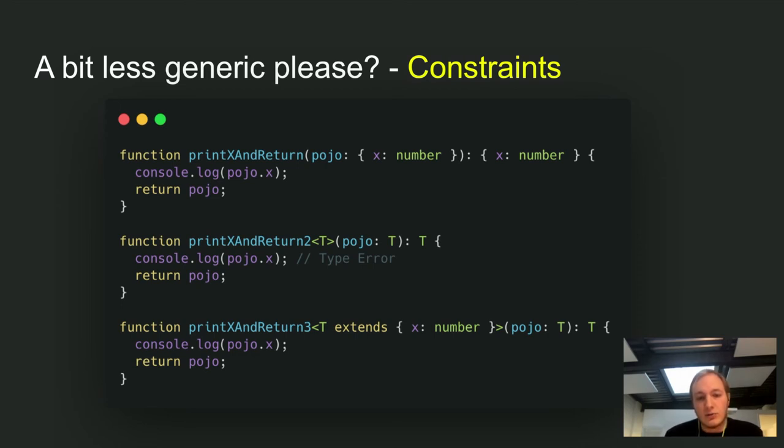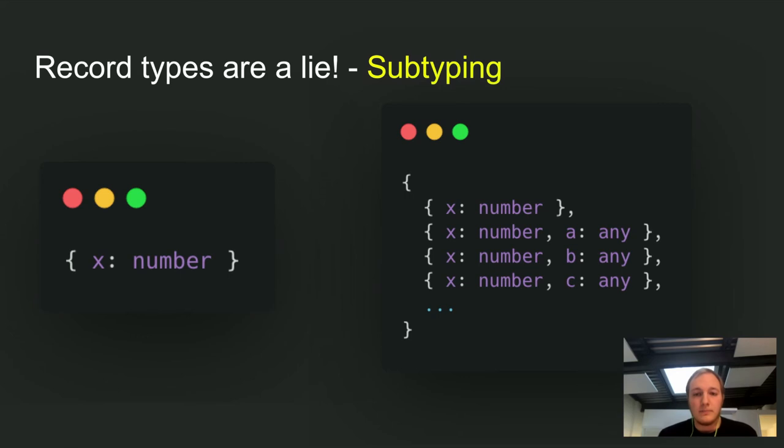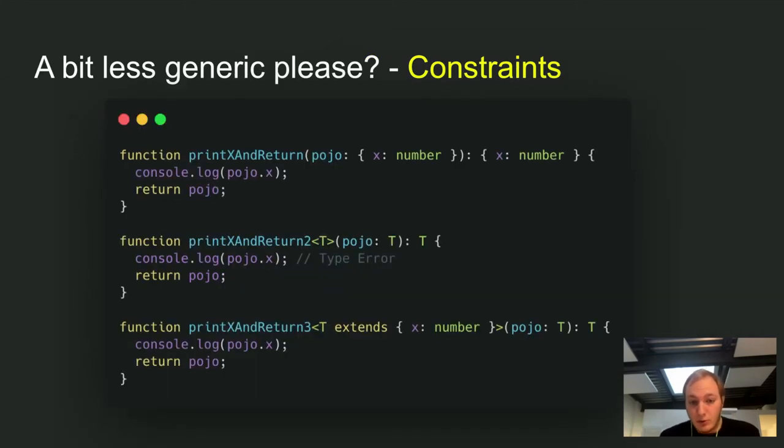So now we can combine the things with constraints. This extends keyword here, this is signifying a constraint. We take, okay, it might be any T, but it has to be in the set that is defined by this. So this T is exactly what we have seen here. This set on the right here. It's at least x number, but it may also be anything else. And we remember what it was afterwards, because this original information is stored in this T. So now we can have our cake and eat it too. So we get this abstract in and return the same thing out again. But we also know that this has an x here.